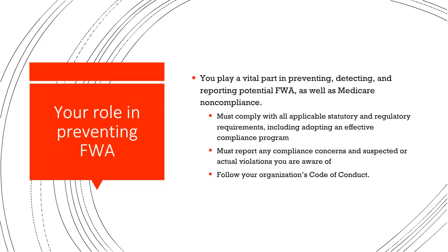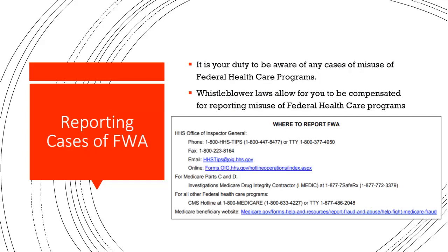Now that we understand fraud, waste, and abuse, we must know how to prevent it. We must comply with all applicable statutory and regulatory requirements, including adopting an effective compliance program. We must be vigilant and report any compliance concerns or suspected violations. Follow your organization's code of conduct. You can report suspected or known cases of fraud, waste, and abuse anonymously — via email, phone number, or through the OIG website. Whistleblower laws allow you to be compensated for reporting misuse of federal health care programs.